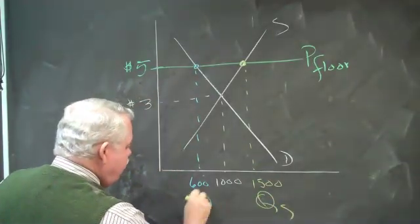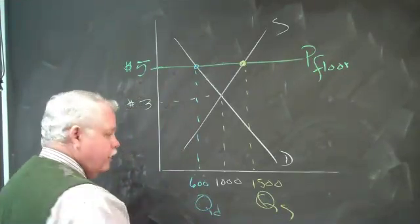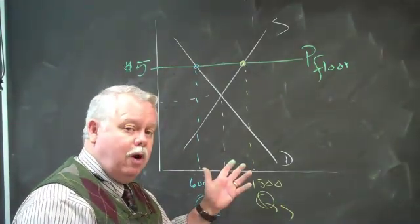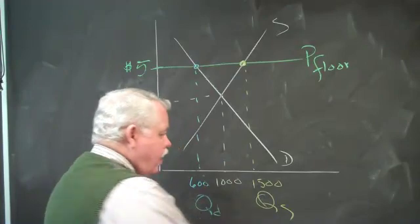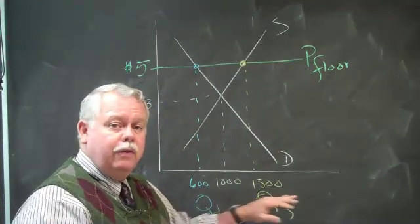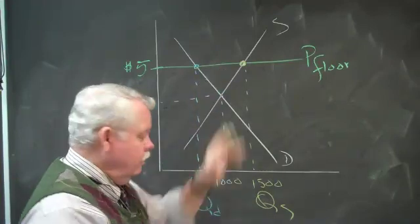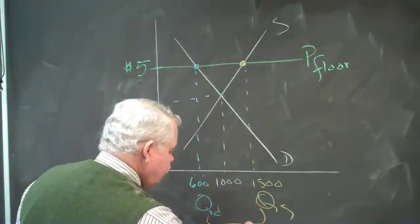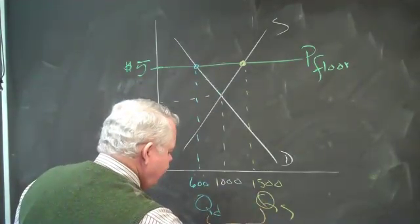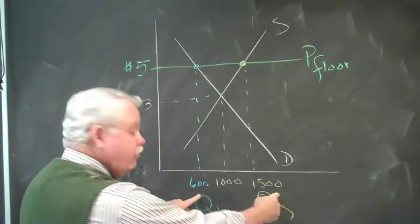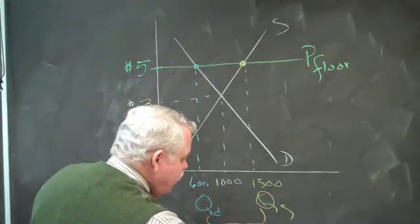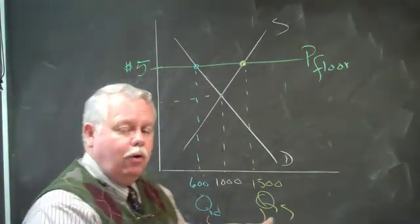What's going on in this market? We've got more for sale than people are willing to buy at that price. We have a surplus. And in fact, the surplus is 900 gallons of milk per day per store.